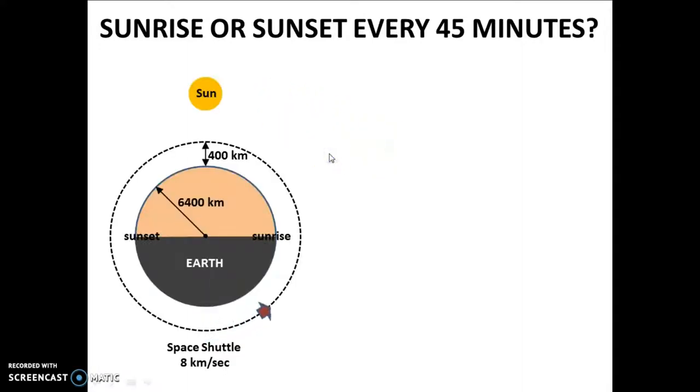You can see in this figure, this is the Earth having a radius of about 6400 km and this is the space shuttle orbiting around the Earth at a speed which is very high, 8 km in a second, at a distance of about 400 km above the Earth.